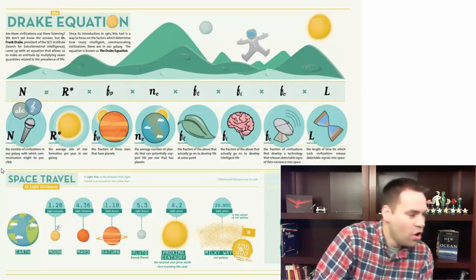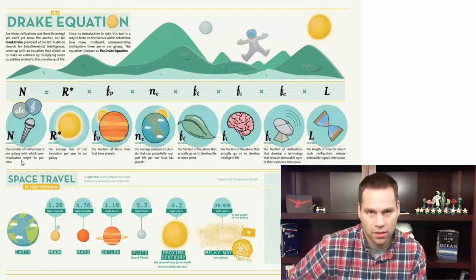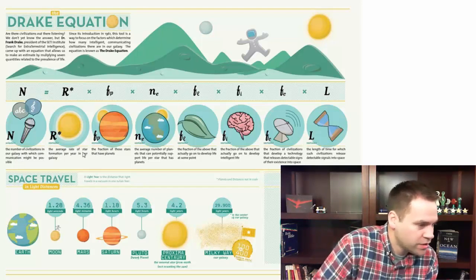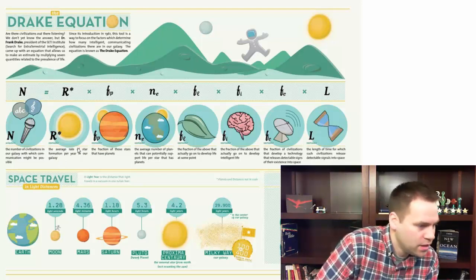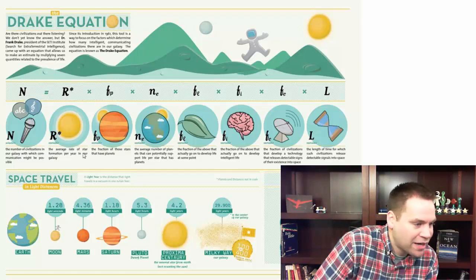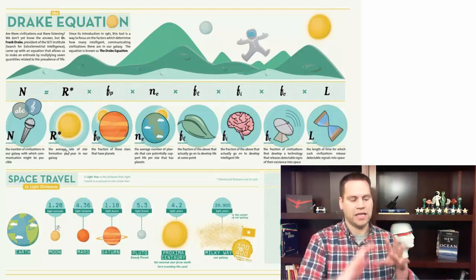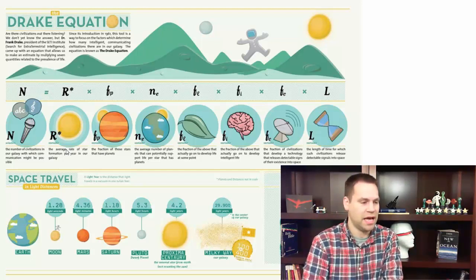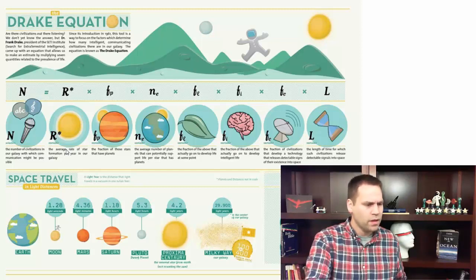In the Drake Equation, N represents the number of civilizations in our galaxy that we could potentially communicate with. That value equals the average rate of star formation per year in our galaxy — basically how many new stars there are every year. We can estimate this quite accurately: about 300 billion stars in our galaxy.